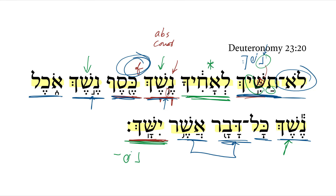Here again is the verbal root 'nashach' — this time it's third masculine singular with a generic subject. So we might say 'anything which someone may lend at interest.'